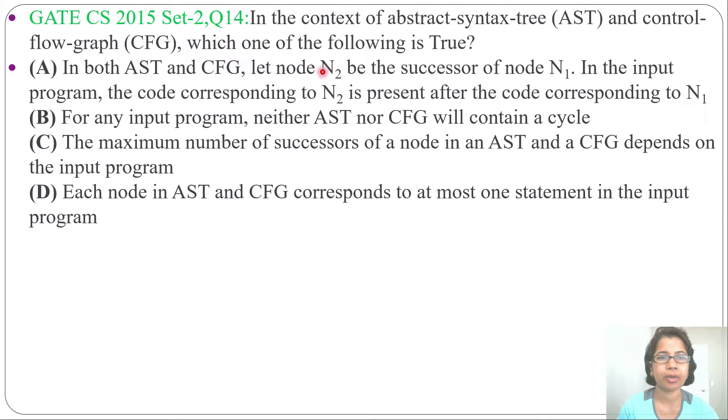Let me analyze one by one option. Option A: in both AST and control flow graph, let node n2 be the successor of node n1. In the input program, the code corresponding to n2 is present after the code corresponding to n1. What it is saying, let this is one node n1, this is another node n2, n2 is the successor of n1, then code of n2 present after code of n1 in the input program.